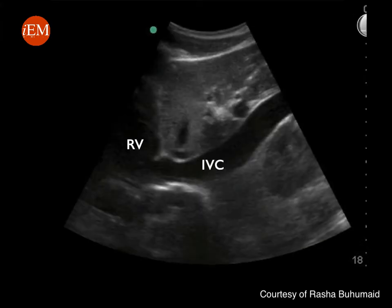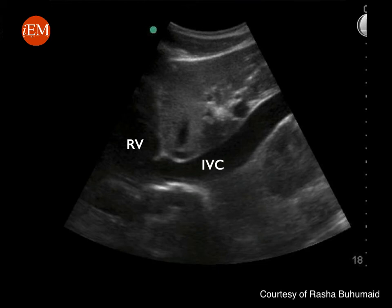This is the corresponding ultrasound image. The IVC is a tubular structure that drains into the right atrium. It's extremely important to visualize the IVC going into the right atrium in order not to confuse it with other structures, for example the abdominal aorta.